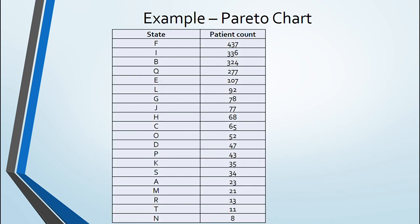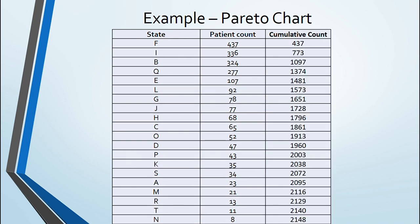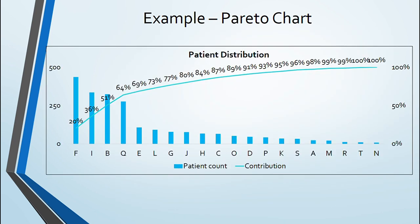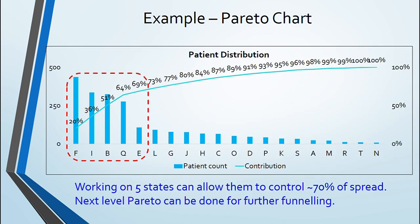Pareto chart was applied to solve confusion. So states were arranged in descending order of patient count. Cumulative addition was performed and then cumulative contribution was assessed. Pareto is created and it was identified that 70% of patients comes from top five affected states.